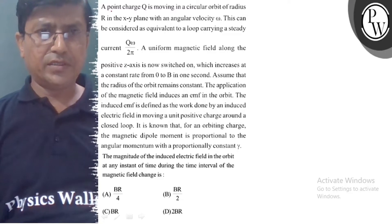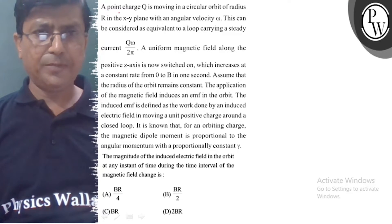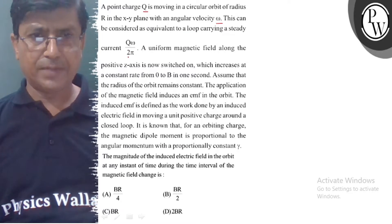Hello, let's understand the question first. A point charge Q is moving in a circular orbit of radius R in the xy plane with angular velocity omega. This can be considered as equivalent to a loop carrying a steady current Q omega upon 2π.